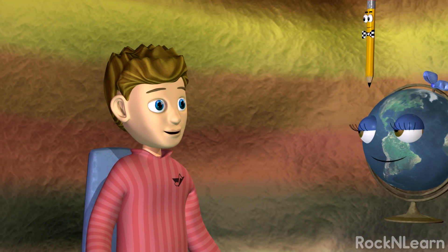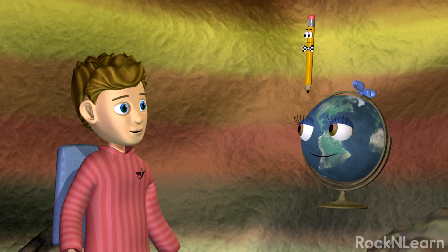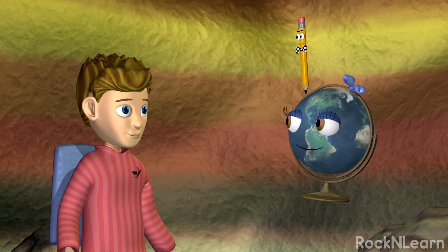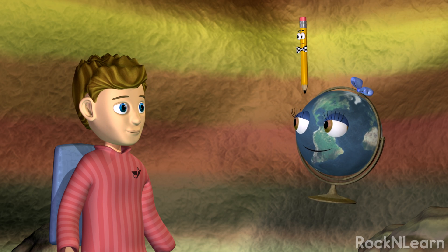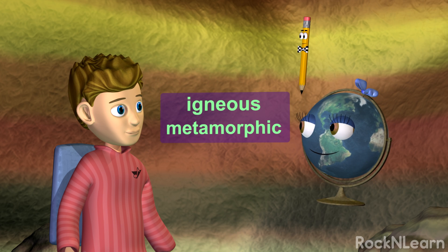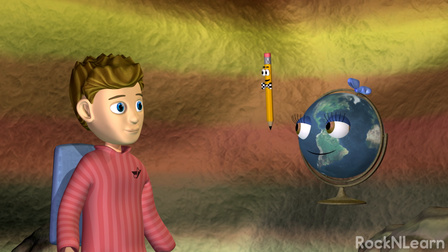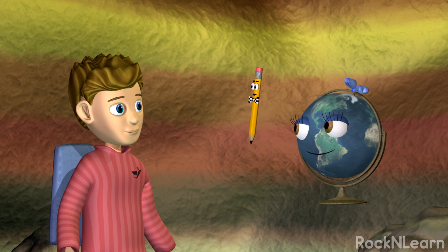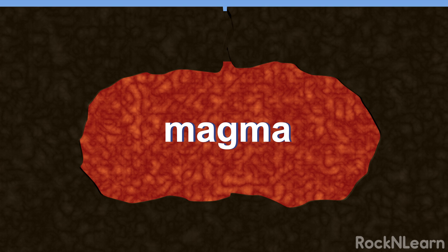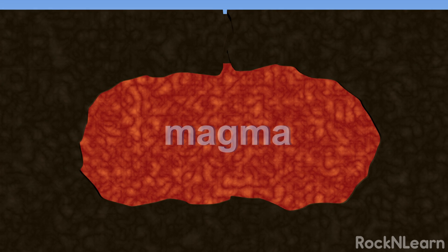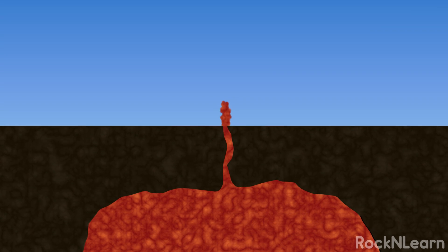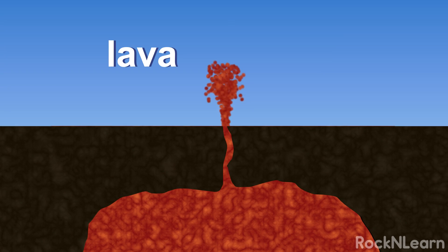Sedimentary rocks make up about three quarters of the rocks at Earth's surface. What about the rest of the rocks — what are they? There are two other kinds of rocks: igneous and metamorphic. Igneous rocks form when molten rock cools and becomes solid. Molten rock is called magma when it is below the Earth's surface, but sometimes magma pushes up through cracks to the surface of the Earth — then it is called lava.